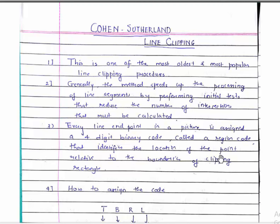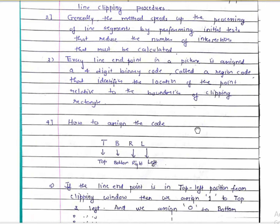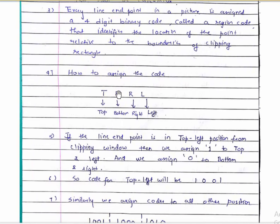The region code identifies the location of the point relative to the boundaries of the clipping rectangle. Suppose there is a line — we assign a four-digit binary code called a region code to each endpoint of that line, and it identifies the region where the point lies. Now, how to assign the code: we have to remember this format — top, bottom, right, left.